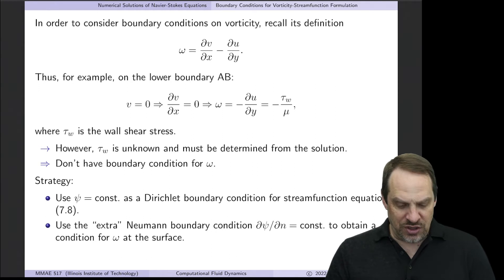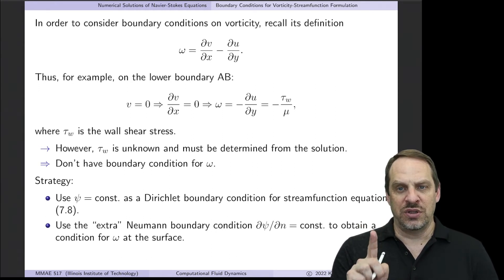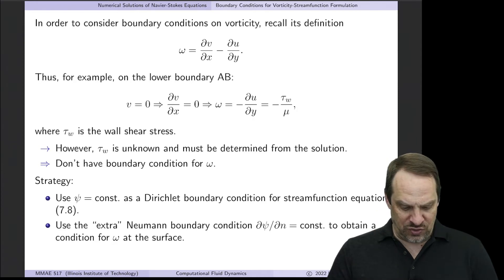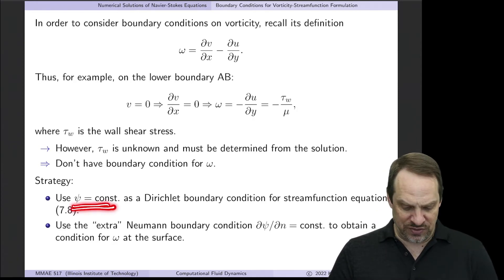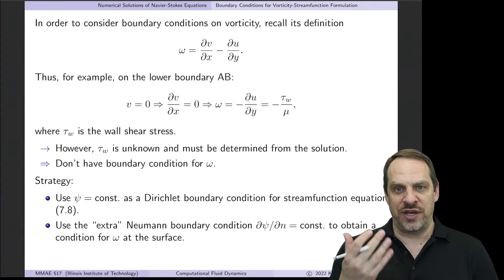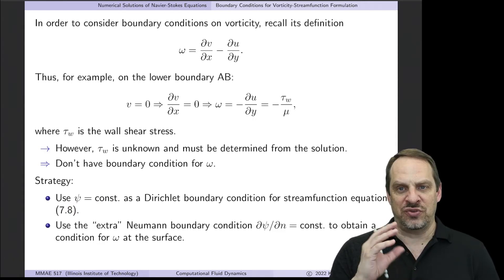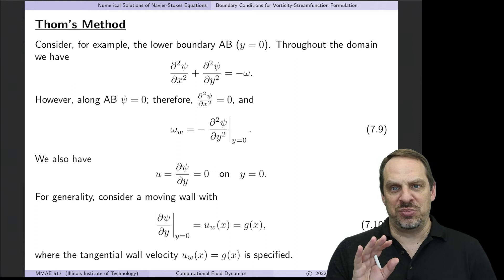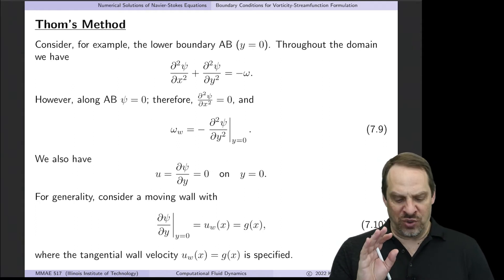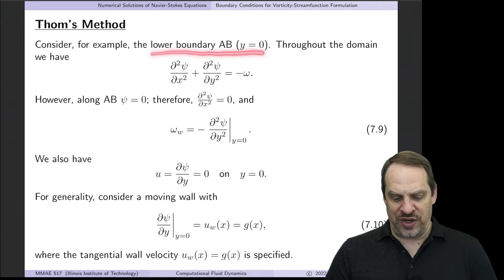Here's the strategy: we have two boundary conditions on the stream function where we only need one. We'll take the Dirichlet boundary condition where ψ is constant on the surface, then take the extra Neumann boundary condition and see if we can translate that into a boundary condition on vorticity. I'll show you Thom's method first — the simplest approach — and it's actually quite effective. Once again, we'll look at the lower boundary to illustrate how this works.